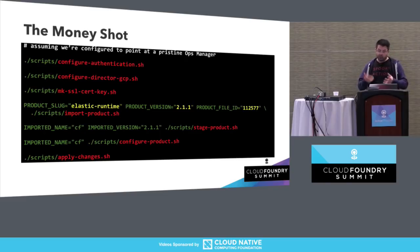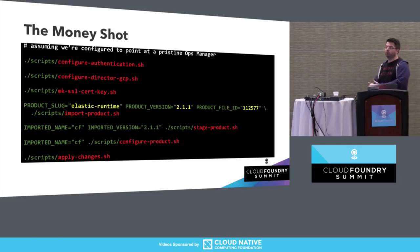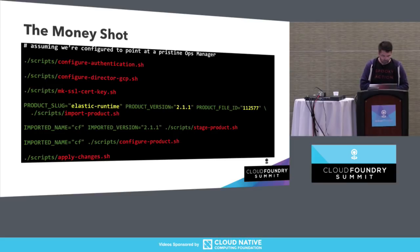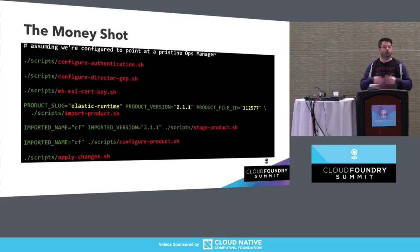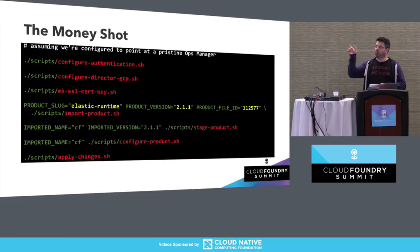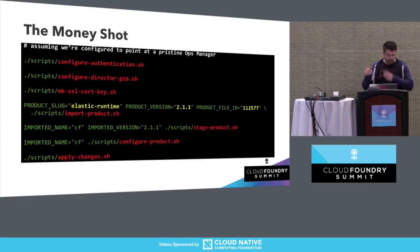First: configure authentication — this is setting up the admin account on your Ops Manager. Second: configure the director tile. It's important to do that in isolation because other tiles have important dependencies, like on the networks, the things decided in your abstraction across networking down to the infrastructure. Then we need to create a key — there are various ways to do this, but I've thrown in a script that generates a self-signed certificate. Then we import the product, stage the product, configure the product, and apply the changes. The product in this case is Elastic Runtime, and we're interested in things called product slugs, product versions, and product file IDs.